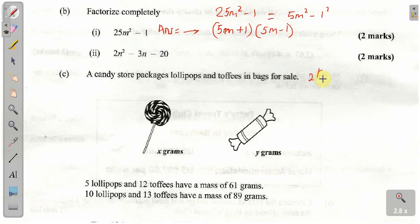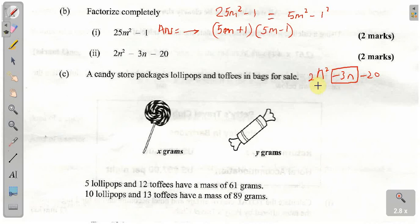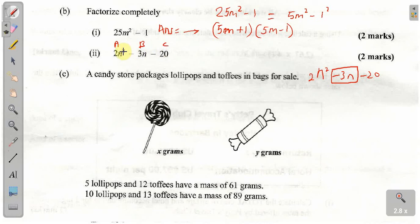Moving on to Part 2: 2N squared minus 3N minus 20. The objective here is to break up this middle term into two terms. This is a trinomial — 2N squared minus 3N minus 20. We want to break it into four terms: 2N squared, the middle term split into two, and the last term minus 20. Let's call the coefficient of N squared A, the middle coefficient B, and the constant C — so A is 2, B is negative 3, and C is negative 20.